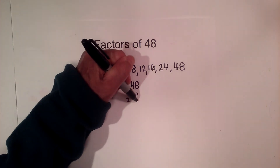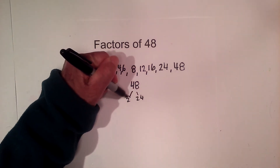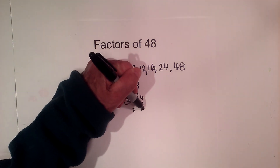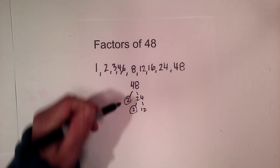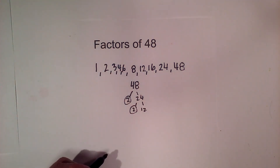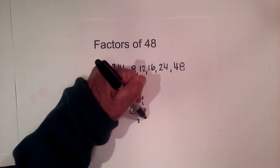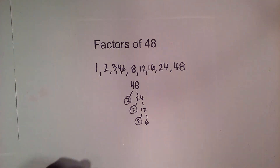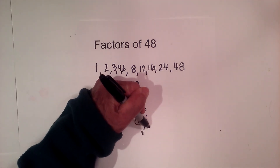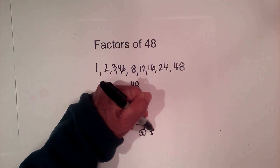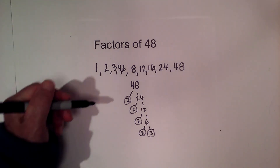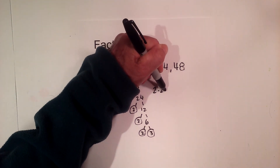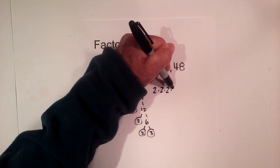Circle the 2 because it is prime. 2 times 12 is 24 — circle the 2 because it is prime. Now 2 times 6 goes into 12 — circle the 2 again. And then 2 times 3 — circle both of these because they are prime.